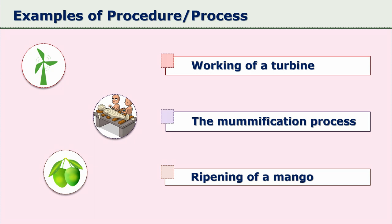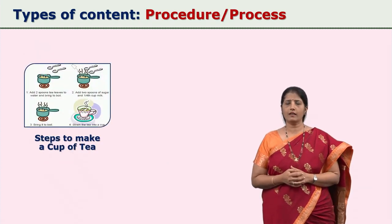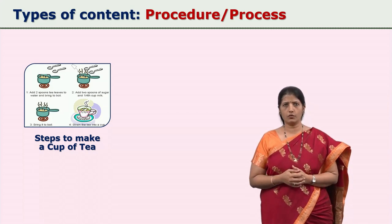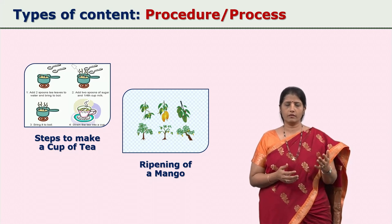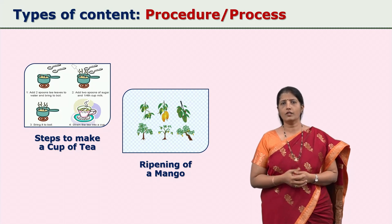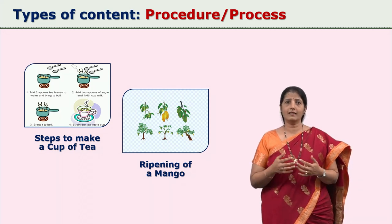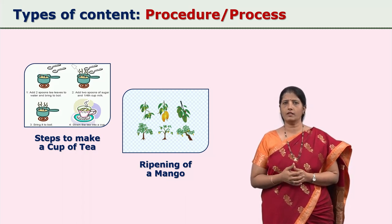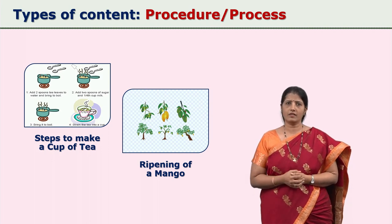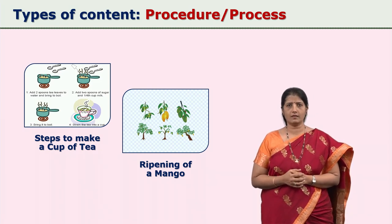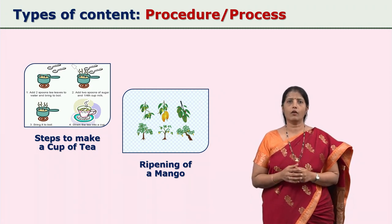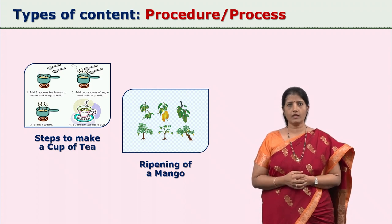Some procedures are under our control — for example, making tea, where you decide when to add tea leaves or sugar. Other procedures are not under our control — for example, the ripening of a mango, which is a natural process. CDT combines both controllable procedures and natural processes under the single category of procedures.